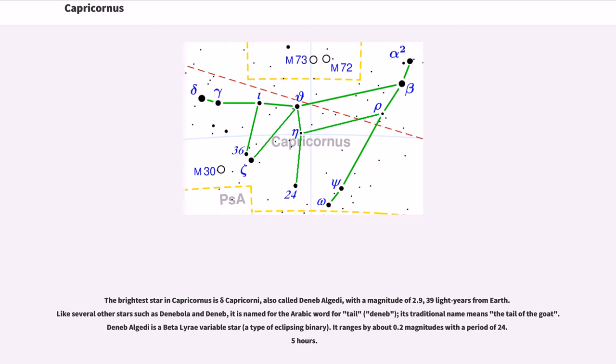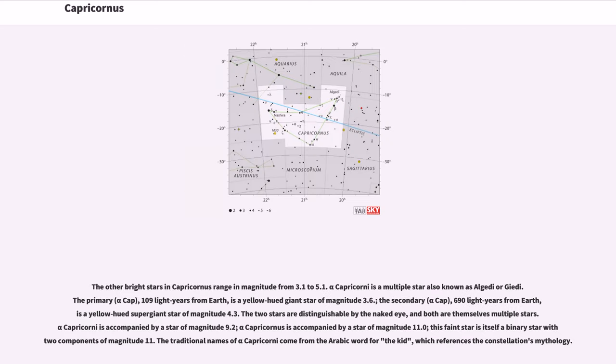Deneb al-Gedi is a beta-Lyrae variable star, a type of eclipsing binary. It ranges by about 0.2 magnitudes with a period of 24.5 hours. The other bright stars in Capricornus range in magnitude from 3.1 to 5.1.